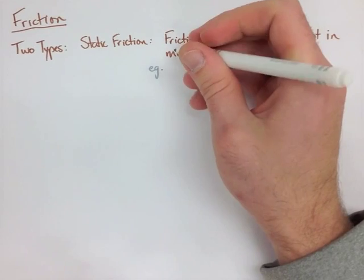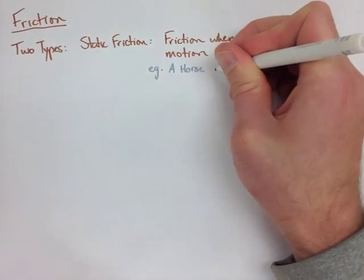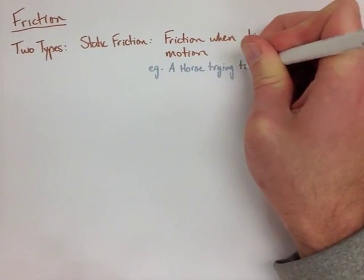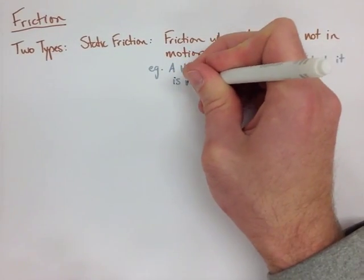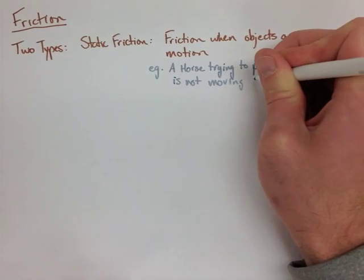An example of this would be a horse trying to pull a sled, but the sled isn't moving yet. It's not able to pull that sled, so the static friction is holding it back.